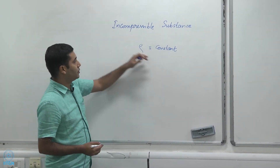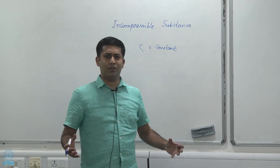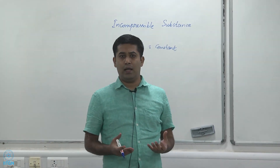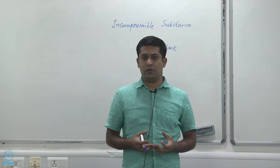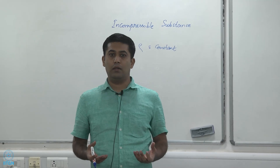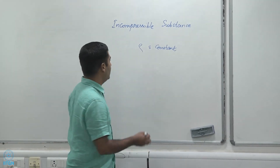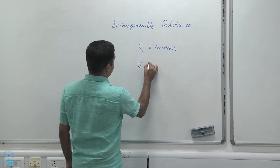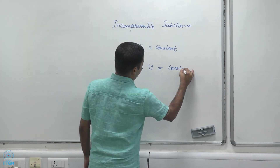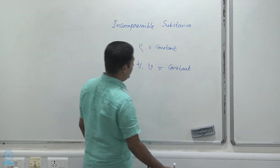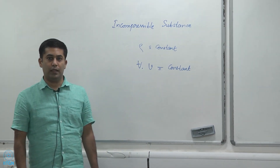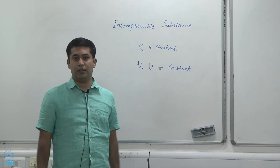For these incompressible substances, the volume does not really change by much, because their density is constant and for a system whose mass is constant, if density does not change then the volume does not change either. This means that the volume as well as the specific volume remain constant, which is a useful approximation we can use to simplify certain things.